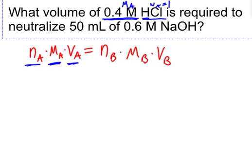We need to neutralize 50 milliliters of 0.6 molar NaOH. The 50 milliliters is Vb, the volume of the base. The 0.6 molar is Mb, the molarity of the base. And looking at NaOH, there is just one OH-minus, so Nb equals 1. The only thing currently missing is Va, the volume of the acid.